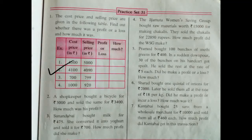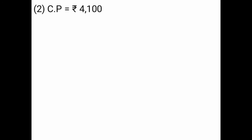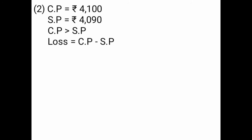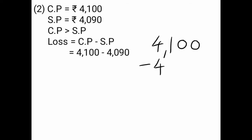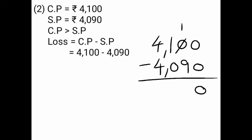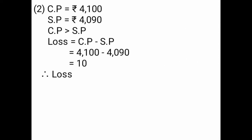Next, cost price is given Rs. 4,100. Selling price is given Rs. 4,090. Cost price is equal to Rs. 4,100, selling price is equal to Rs. 4,090. Cost price is greater than selling price, so you have to find loss. The formula of loss is cost price minus selling price, that is Rs. 4,100 minus Rs. 4,090. I have subtracted and I am getting the answer 10. Therefore, loss is equal to Rs. 10.